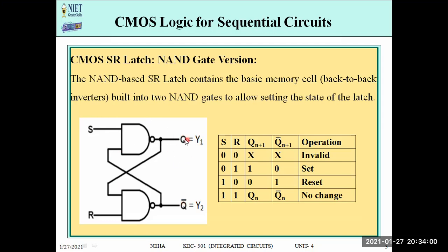Q and Q-bar means that if one is 1, the other will be complemented and 0. For CMOS designing purposes, I have given Q and Q-bar the names Y1 and Y2, because we denote Boolean expressions in X and Y for CMOS logic design. We know that the NAND-based SR latch has memory cells — it is a sequential circuit memory element.